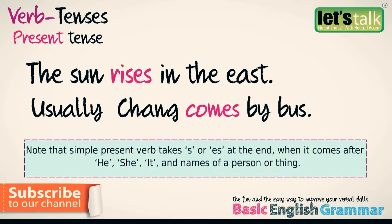Note that simple present verb takes s or es at the end when it comes after he, she, it, and names of a person or a thing.